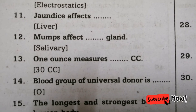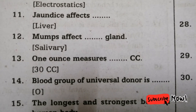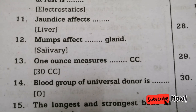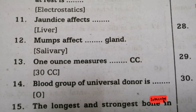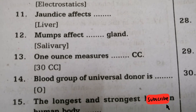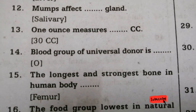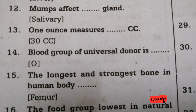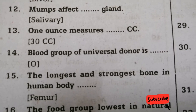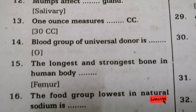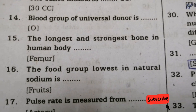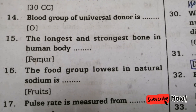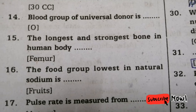Twelfth one: mumps affects which gland? Answer is salivary gland. Next question: one ounce measures how many CC? Answer is 30 CC. Next question: blood group of universal donor — right answer is blood group O. Next question: the longest and strongest bone in the human body — answer is femur.